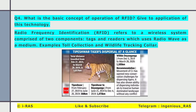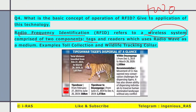What is the basic concept of operation of RFID? Give two applications of this technology. RFID stands for radio frequency identification. It is a wireless system comprised of two components: a tag and a reader. Tags are used to transmit and emit radio waves, and readers catch those signals using radio waves as a medium. Examples of applications include toll collection and wildlife tracking collars.